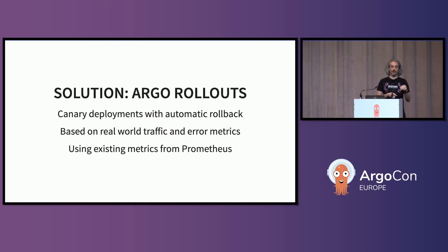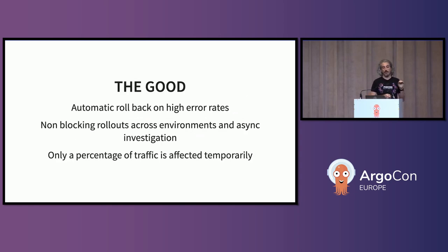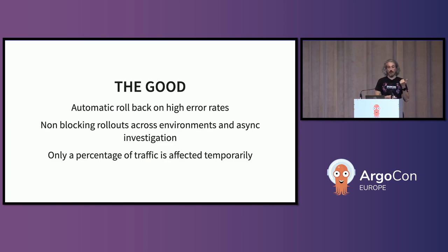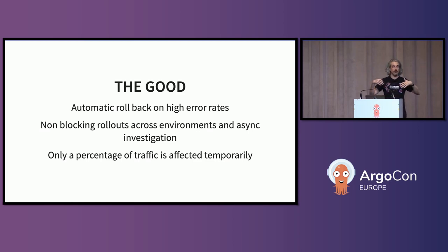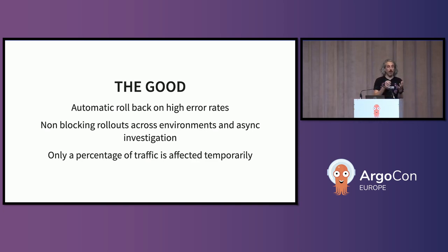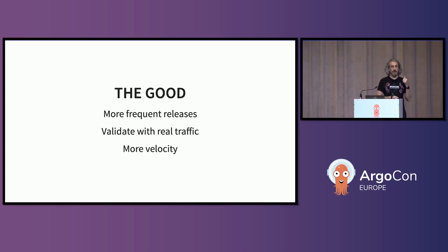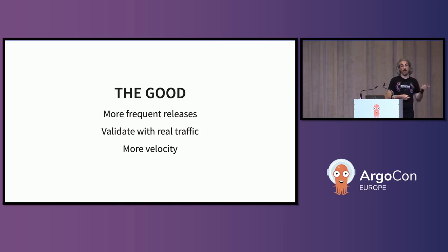The solution — spoiler: Argo Rollouts. We are working on canary deployments with automatic rollback. This is based on real-world traffic and real-world error metrics from Prometheus. The advantages of automatic rollback: when we have higher error rates we get non-blocking rollouts across environments. We can have asynchronous investigation — if a customer is broken, it's automatically rolled back and the release can continue across other customers if only a few are affected, because the blast radius is very small and only a percentage of traffic is affected. In summary, this means more frequent releases validated with real traffic, giving us much more velocity.